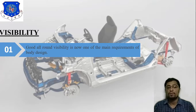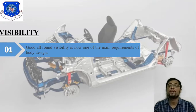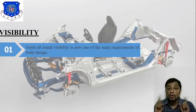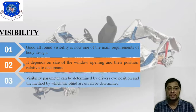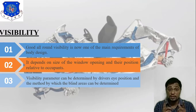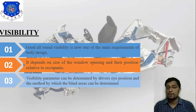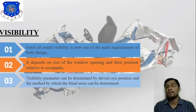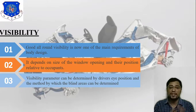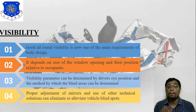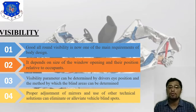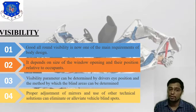Next is visibility. As a driver, visibility is a very important parameter. Good all-around visibility is now one of the main requirements of body design. It depends on the size of the window openings and their position relative to the occupant. Visibility parameters can be determined by the driver's eye position and the method by which blind areas can be determined. Proper adjustment of mirrors and use of other technical solutions eliminate or reduce blind spots.